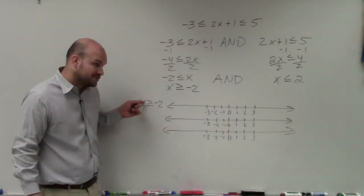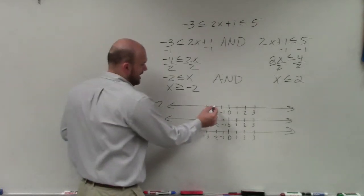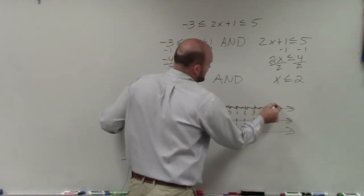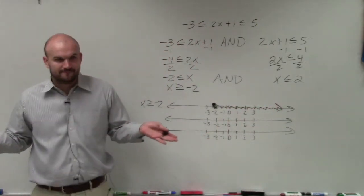If I was going to graph the inequality x is greater than or equal to negative 2, I would go to negative 2, fill in the dot, and then shade to the right. Everybody follow me?